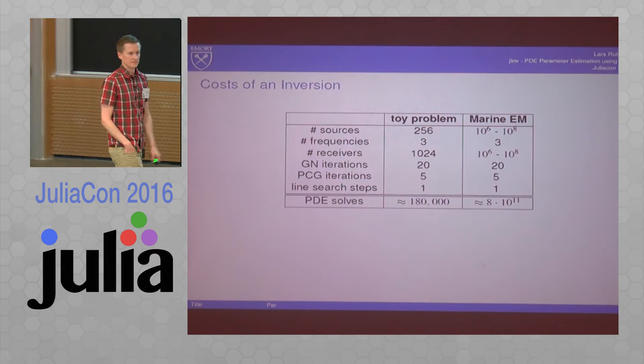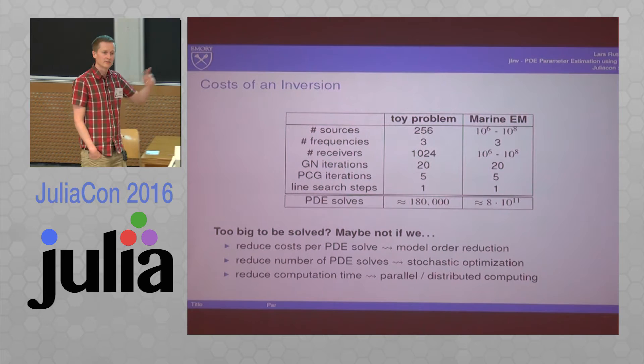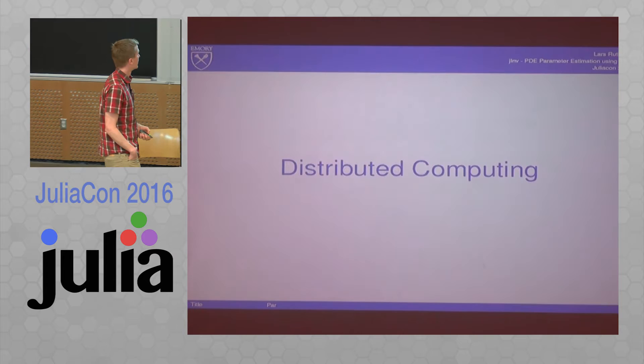So how to solve these problems? Of course, one way to go - there's model order reduction and stochastic optimization. And one way I'm going to emphasize now is parallel and distributed computing.